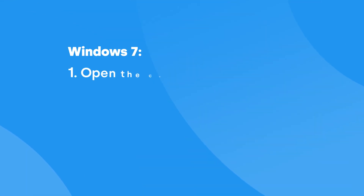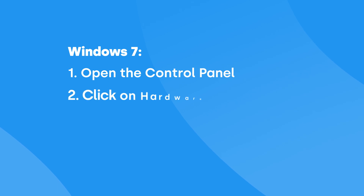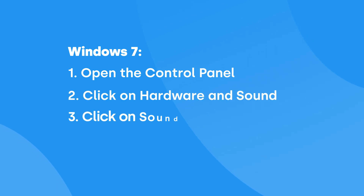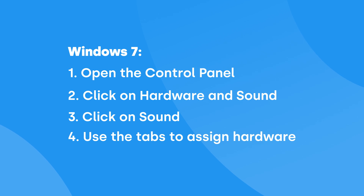To set up a Windows 7 device you'll need to open the Control Panel, choose the Hardware and Sound option, click on Sound, and then check the hardware used for playing and recording sound under the individual tabs, then select your preferred ones as the default.